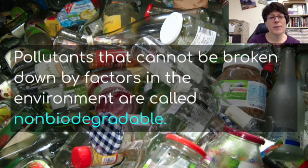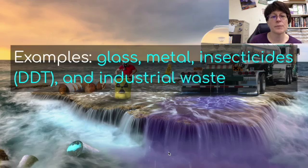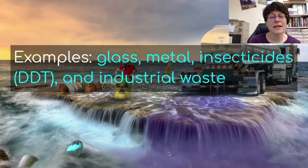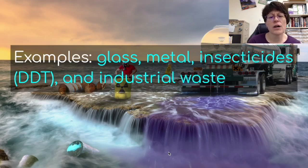Pollutants that cannot be broken down by factors in the environment are called non-biodegradable — they do not degrade, they do not break down. Some examples are glass, metal, insecticides which include DDT, and industrial waste. Beach glass is a pollutant, even though it's pretty. Metal that's rusting and laying around can pollute. Our rivers were full of industrial waste for a while, killing wildlife. Mercury can also build up and cause problems if we eat fish that contain it.